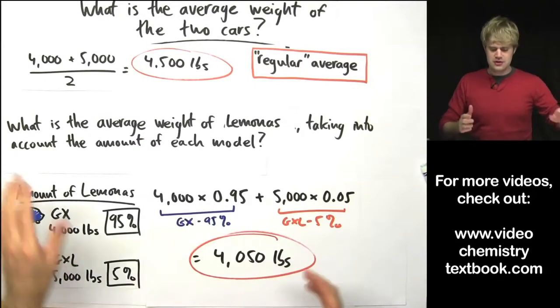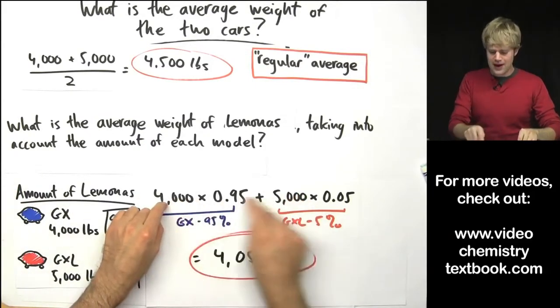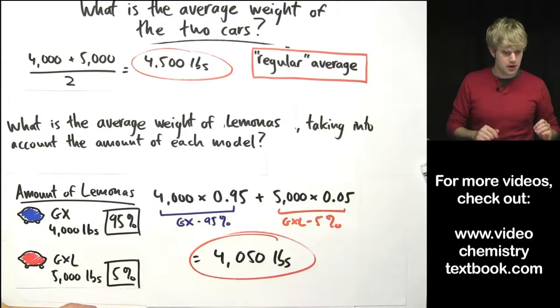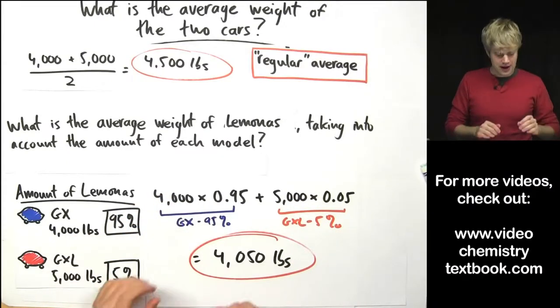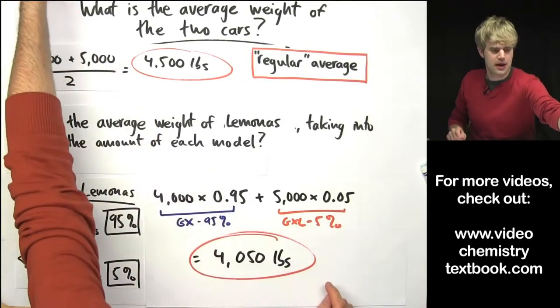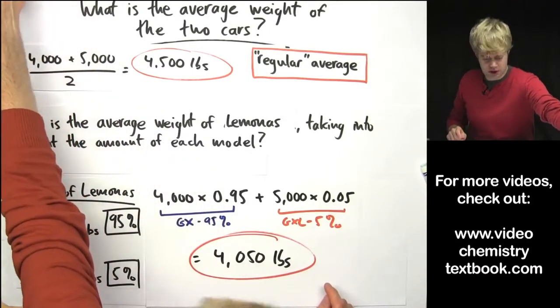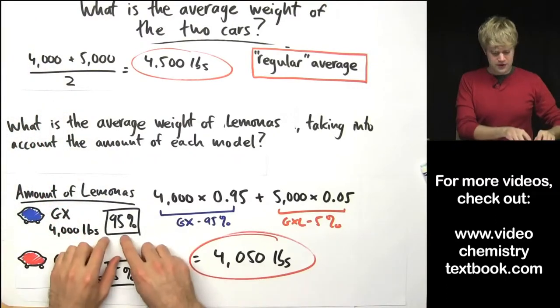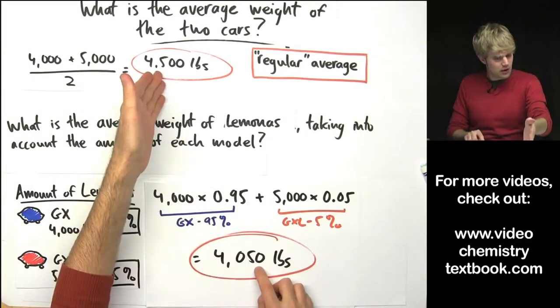here's an average that takes into account the weights of both of these models. But it also takes into account the amount that we have of each. And so, because there are so many more of the GXs, the average isn't right in the middle.